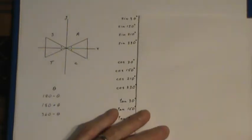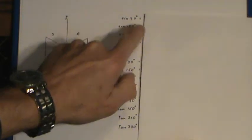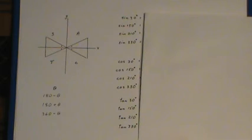Now for example, let's look at 30 degrees. You get four angles as you go around here that have a 30 degree angle between the terminal arm and the x-axis.